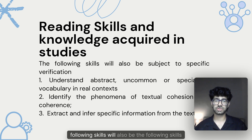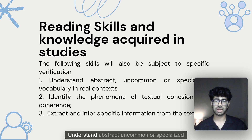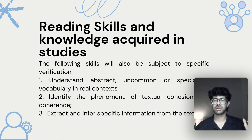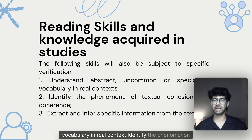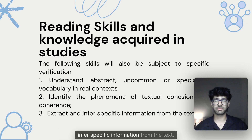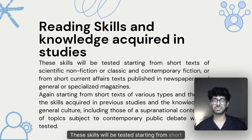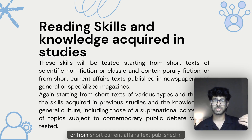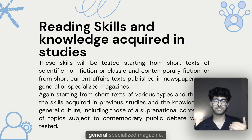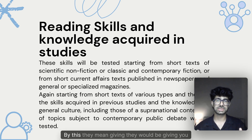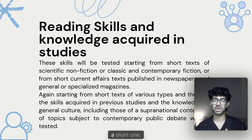The following skills will also be subject to specific verification: understanding abstract, uncommon, or specialized vocabulary in real context; identifying phenomena of textual cohesion and coherence; extracting and inferring specific information from text. These skills will be tested starting from short texts of scientific non-fiction, classical and contemporary fiction, or short current affairs texts published in newspapers or general specialized magazines — essentially an unseen or comprehension passage.